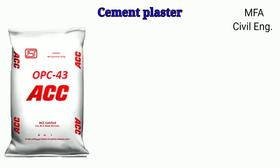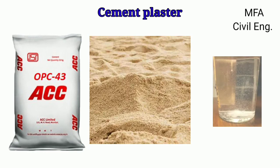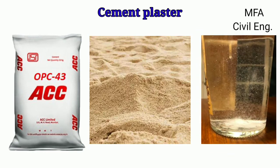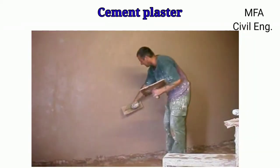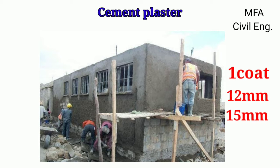Cement plaster is a mixture of Portland cement, sand (fine aggregate), and water in appropriate proportion, normally applied to the masonry interior and exterior wall to obtain a smooth surface. Cement plaster is usually applied in only one coat; the thickness can be 12 mm, 15 mm, or 20 mm depending on the type of building and site conditions.